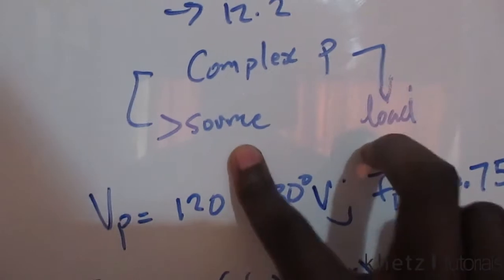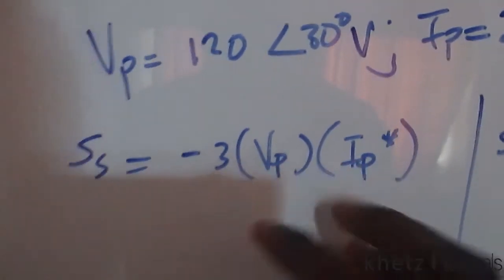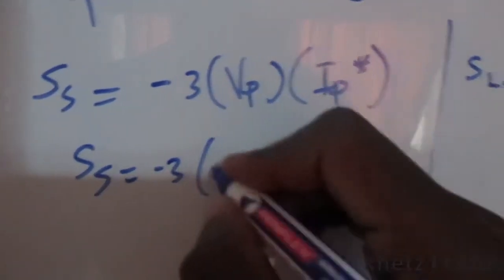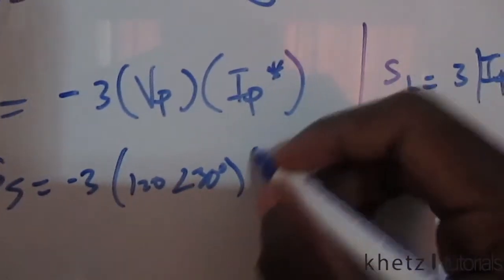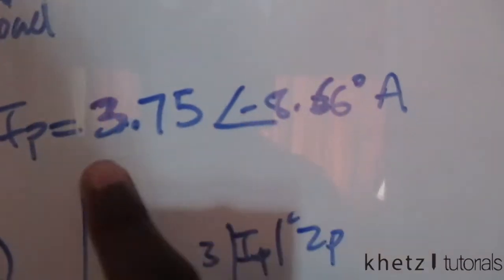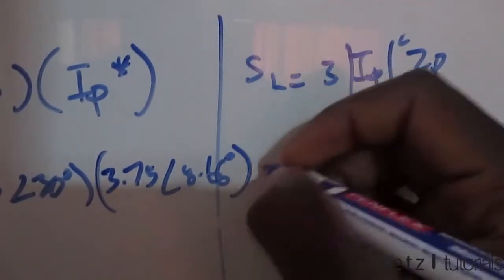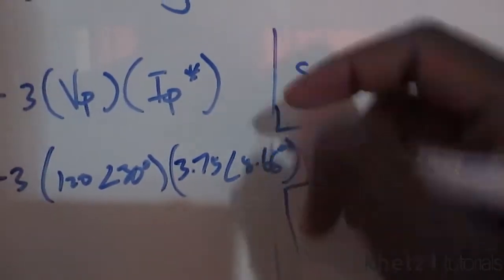The formula for the complex power at the source is Ss = -3(Vp)(Ip*), and you substitute the values for phase voltage and the conjugate of the phase current. You find the conjugate by changing that sign, so you'll have 3.75 with an angle of positive 8.66 degrees.